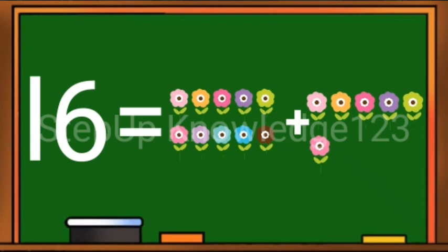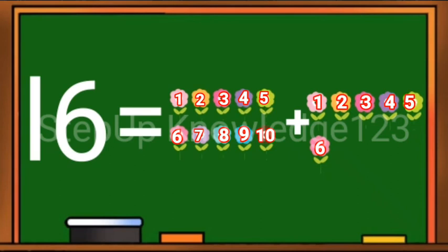Students, let's count together. 1, 2, 3, 4, 5, 6, 7, 8, 9, 10. 10 flowers. Add 6 flowers to it. 10 plus 6 is equal to 16. 16 flowers.